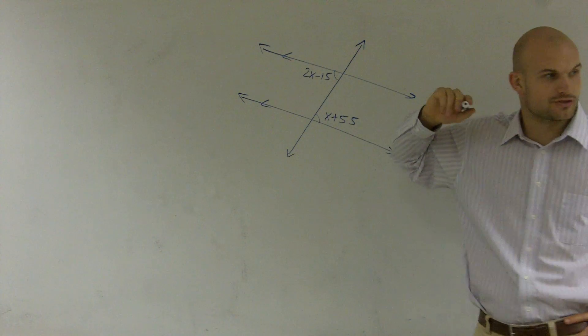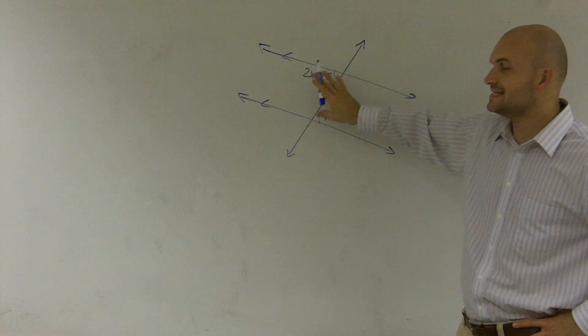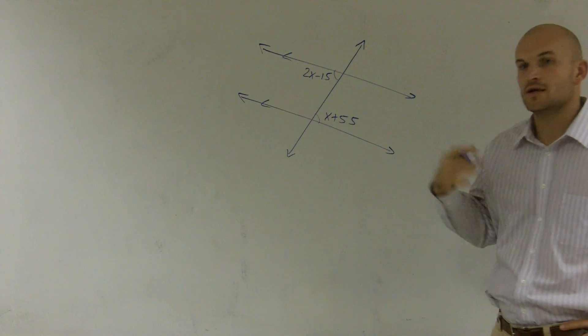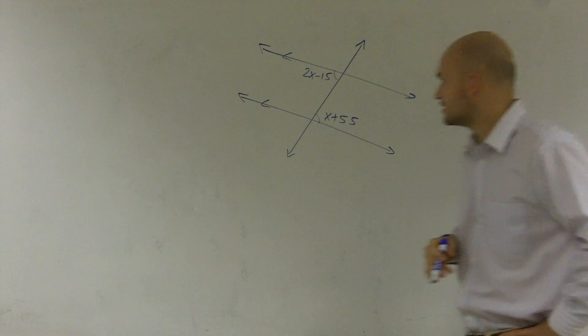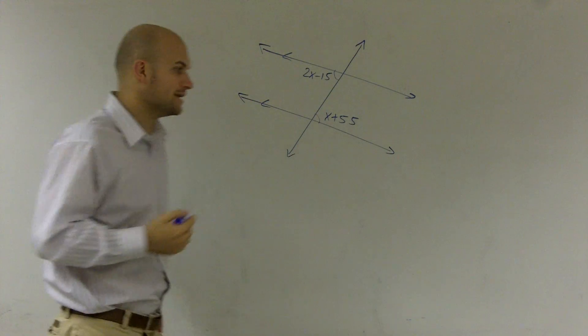They alternate by which side they're on the transversal, and they're both inside of my parallel lines. So therefore, they're alternate interior angles. Alternate interior angles are equal to each other.